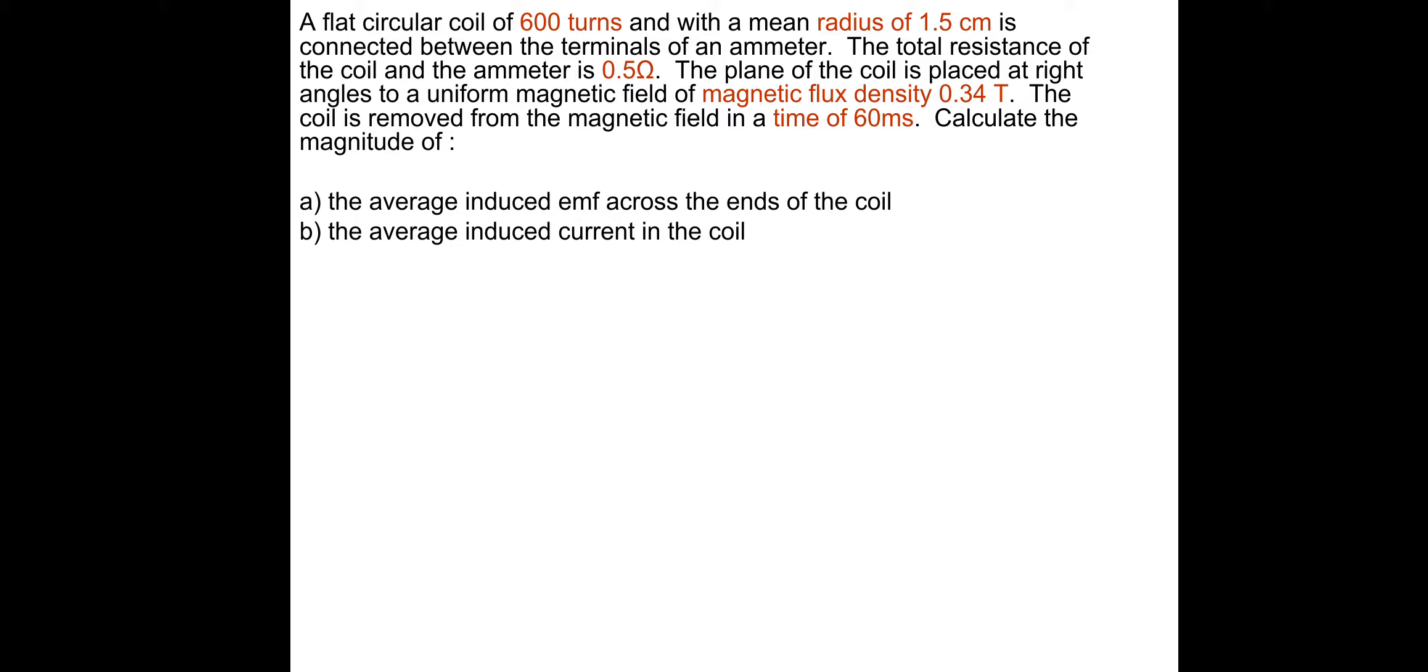Let's do this question then. Go and pause and have a go, and then I'll take you through the answer. A flat circular coil of 600 turns and with a mean radius of 1.5 centimeters is connected between the terminals of an ammeter. The resistance of the coil and the ammeter is 0.5 ohms. The plane of the coil is placed at right angles to a uniform magnetic field of magnetic flux density 0.34 tesla. The coil is removed from the magnetic field in a time of 60 milliseconds.